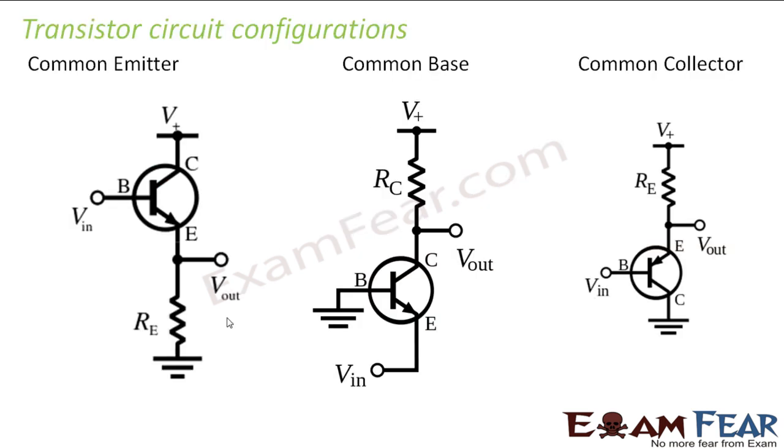We will now talk about transistor circuit configurations. A transistor has three different configurations in which it is arranged in a circuit. Till now I was telling you only about the structure of the transistor - what does it consist of? It has emitter, it has base, it has collector. How do we bias a transistor? I was telling only about those things.